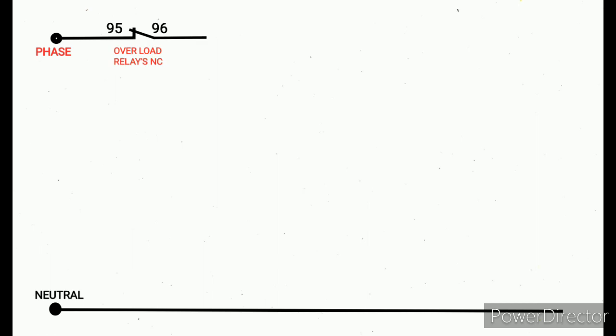Next step, that overload relay NC 95-96. This NC is used for overload tripping. If the motor gets overload, that overload gets tripped so that 95-96 NC comes to NO, so the circuit is protected. Next we need to draw off push button in series with that overload relay NC.